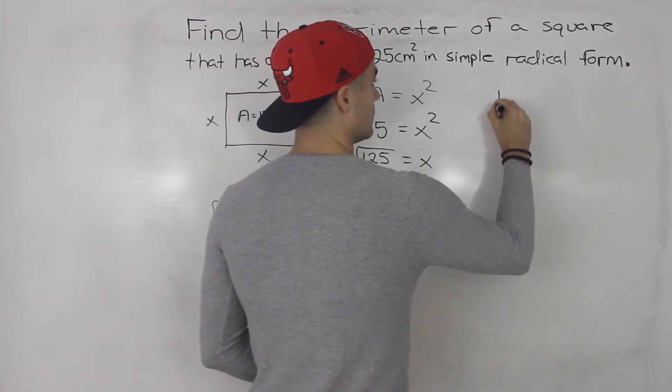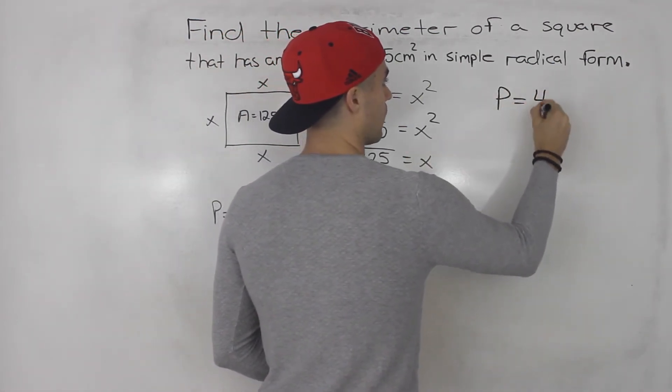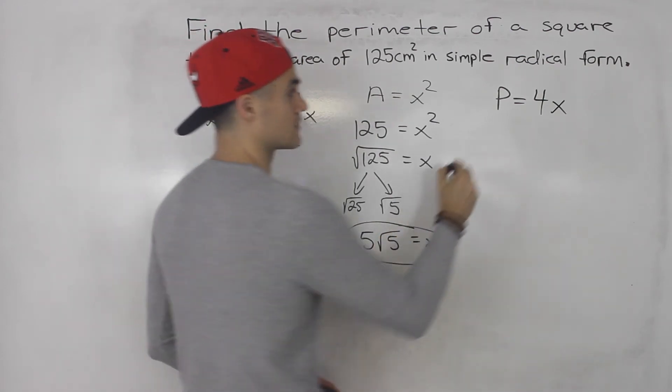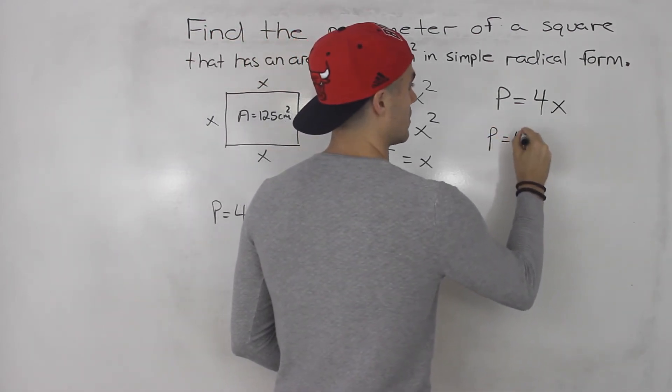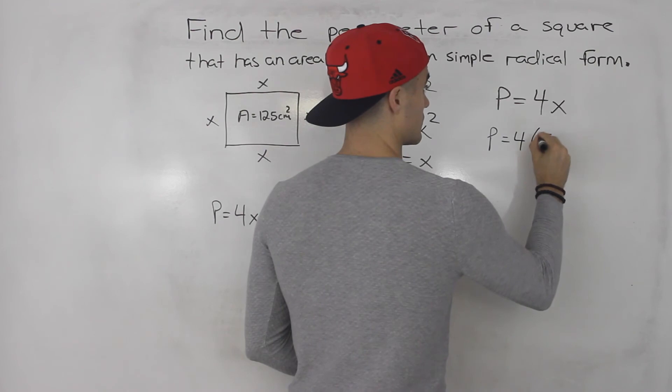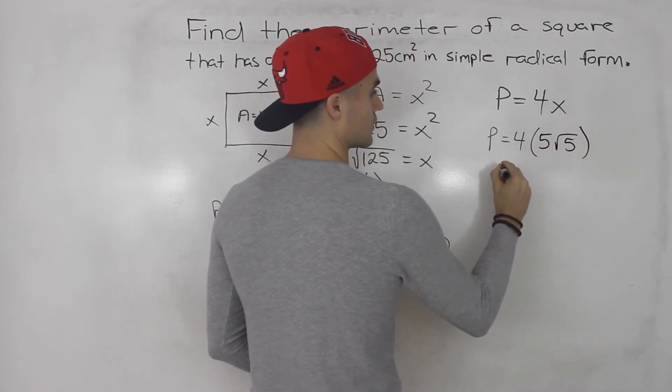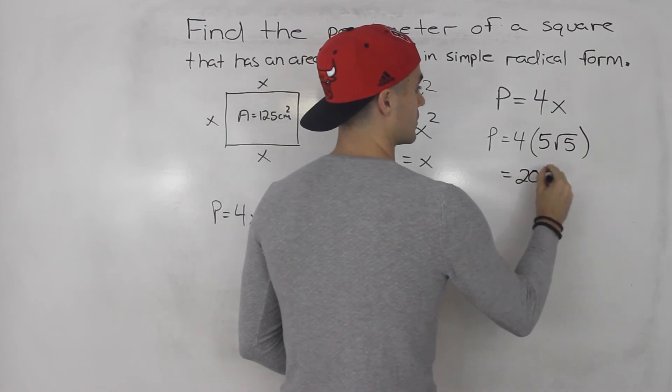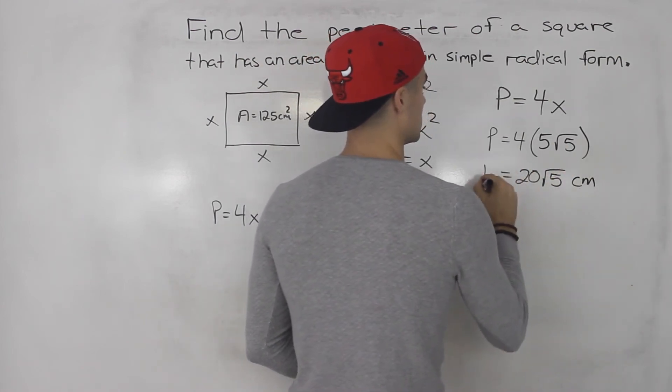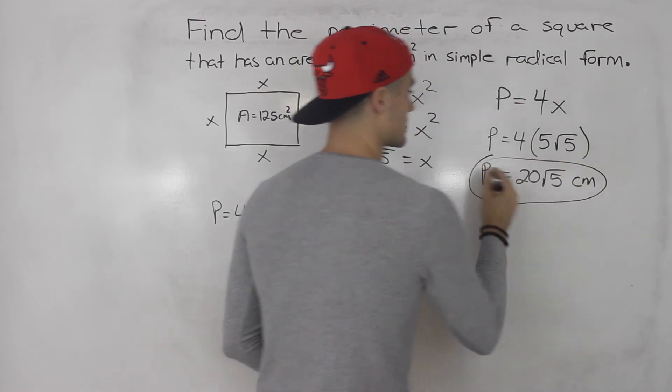So then the perimeter is equal to 4, four times that length there. So perimeter would be 4 times 5 root 5. The 5 here and the 4 you can just multiply, so 20 root 5 centimeters is the answer.